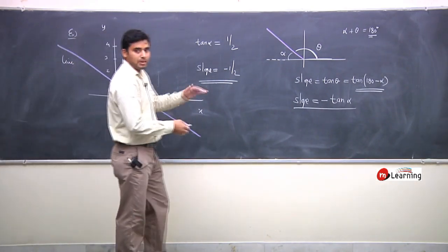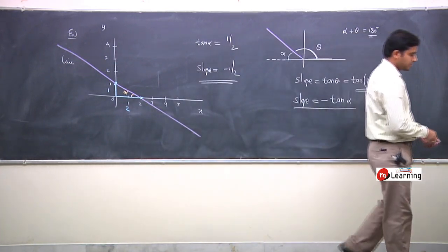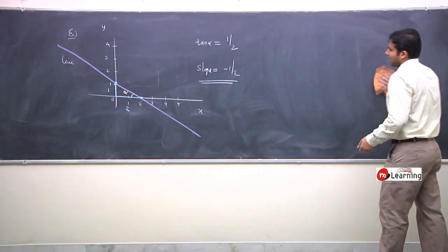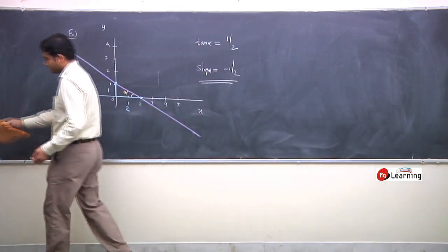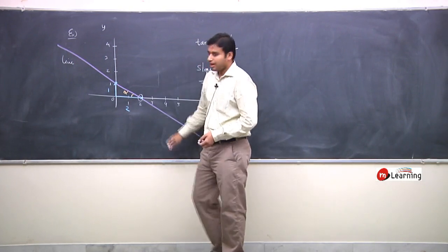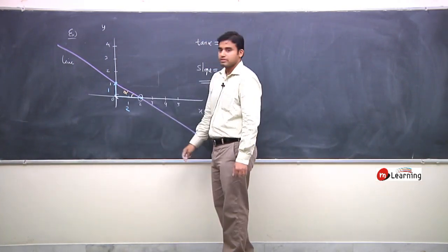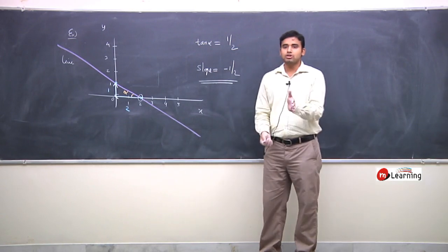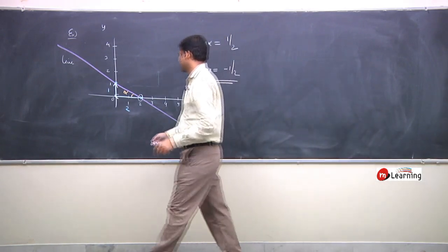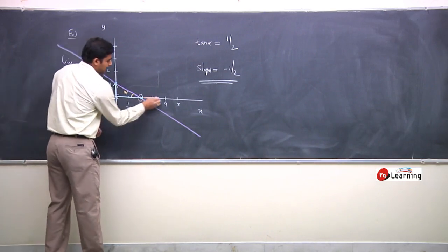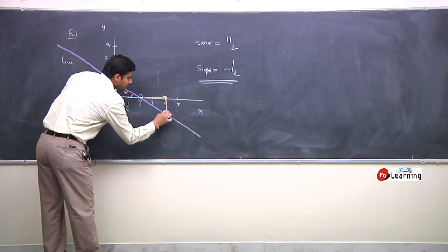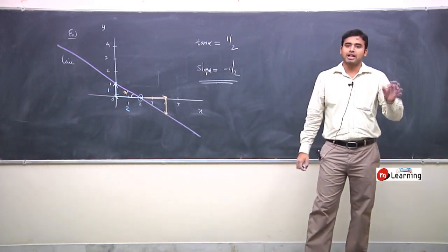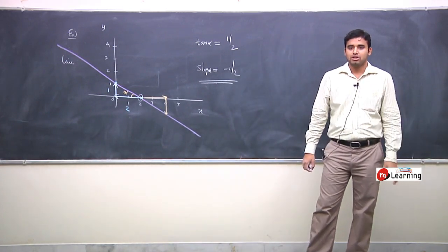Minus means: when x increases, y decreases; and when x decreases, y increases. So if you go to the right, x increases but y decreases. Negative slope means x increases then y decreases. Positive slope means x increases then y also increases.